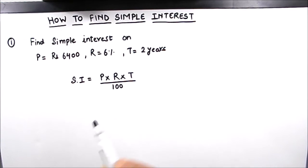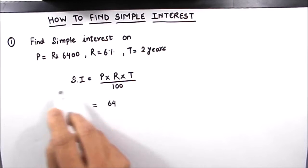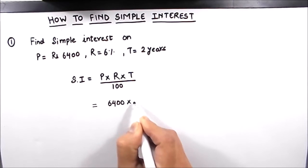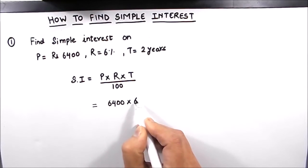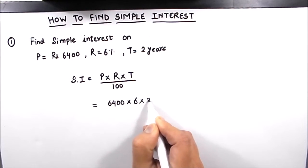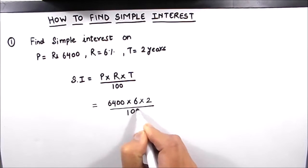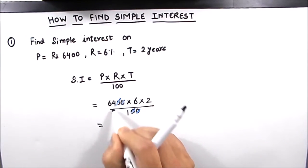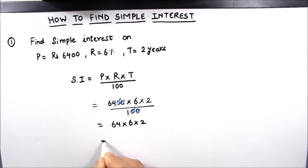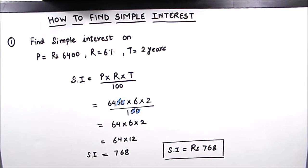Here our values are P is the principal amount which is equal to 6400, R is rate of interest which is six percent per annum, and time is two years divided by 100. So these two zeros get cancelled with these two zeros, so we are left with 64 times 6 times 2 which is equal to 64 times 12, and 64 times 12 is 768. So the simple interest is rupees 768. This is our final answer and this is the simple interest we are going to pay after two years.